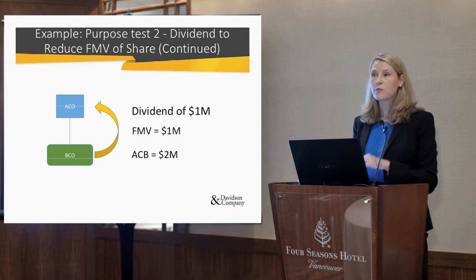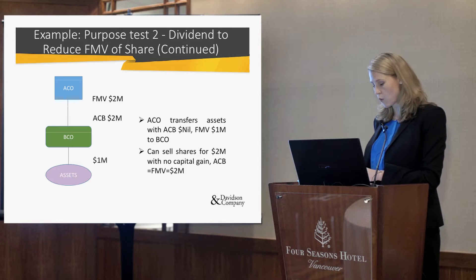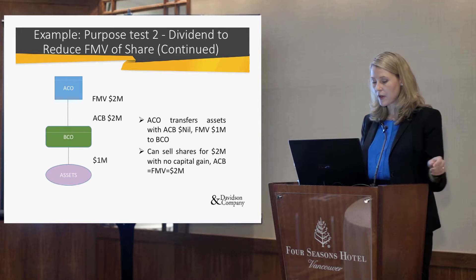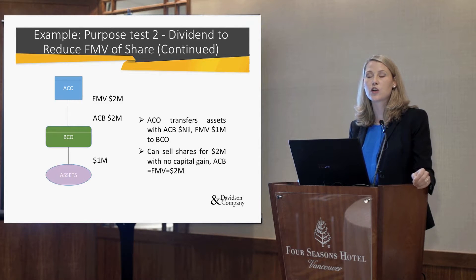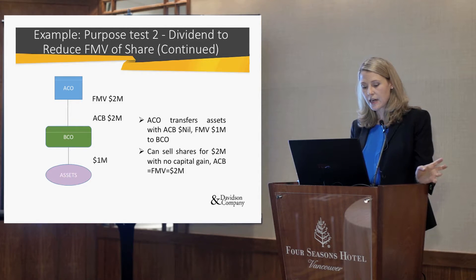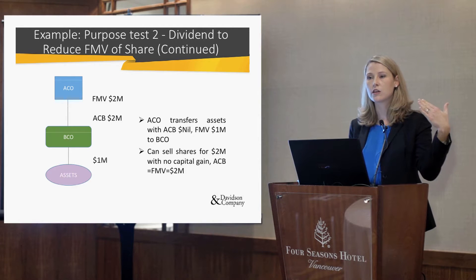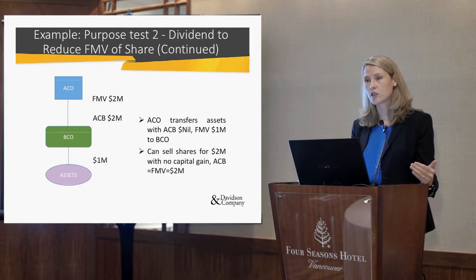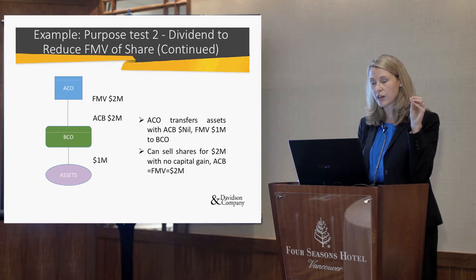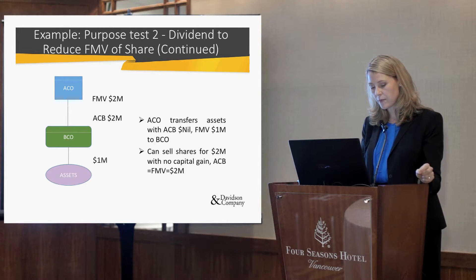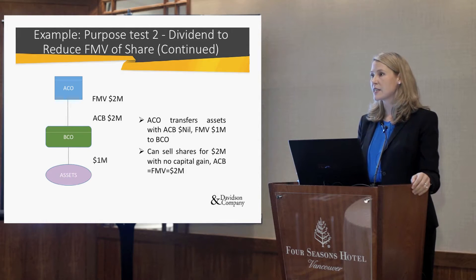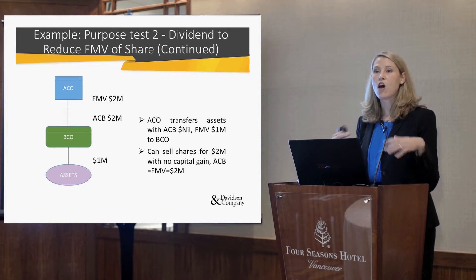So how did tax people use this previously to avoid paying tax? Company A transfers an asset worth $1 million but with no cost base to Company B on a tax-deferred basis — so no tax is triggered on the transfer. Suddenly Company B is worth $2 million with a cost base of $2 million. Company A can then go ahead and sell the shares of Company B without triggering any gain. You can see why CRA really didn't like this scenario.